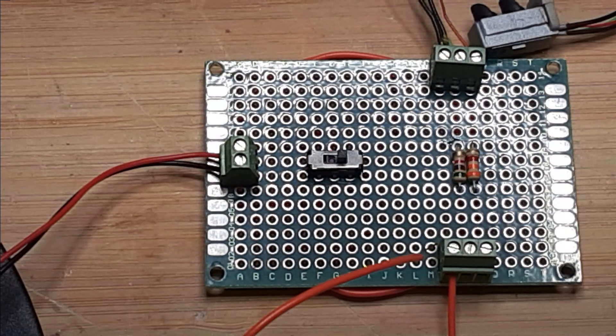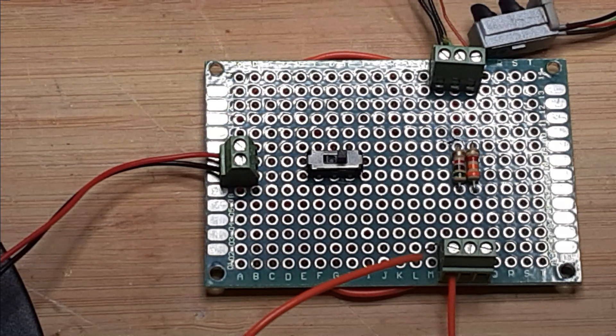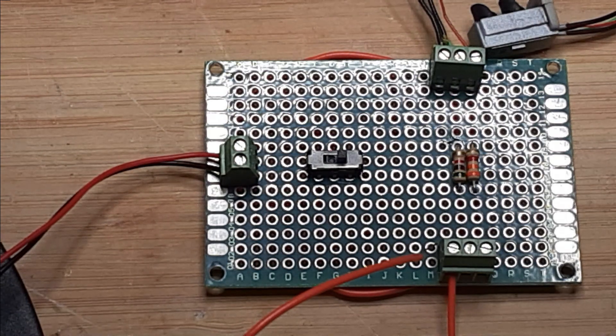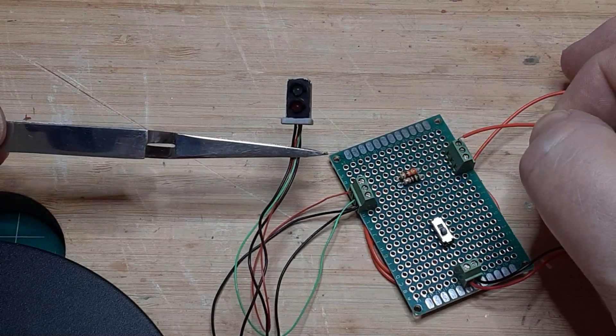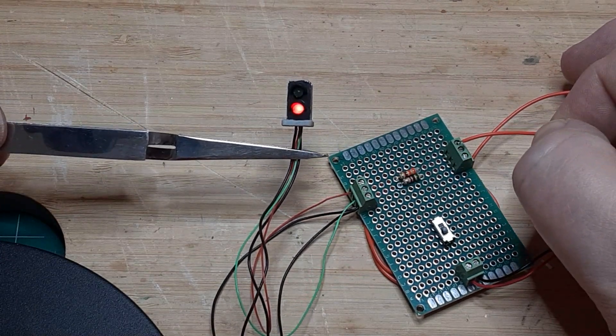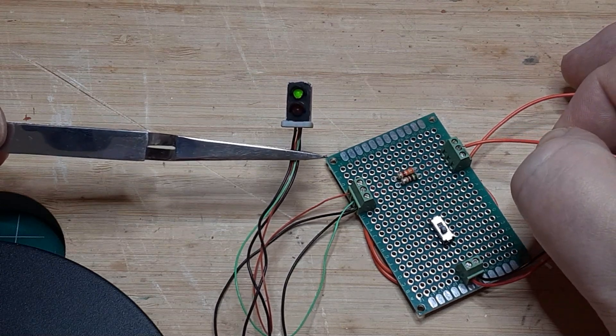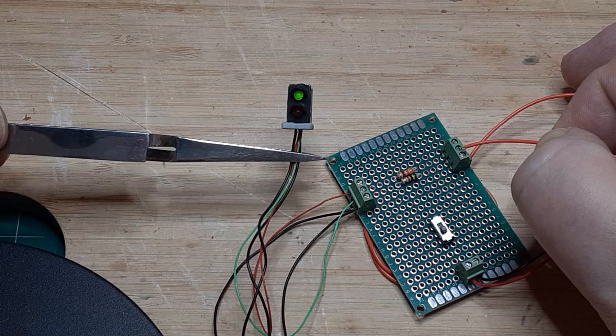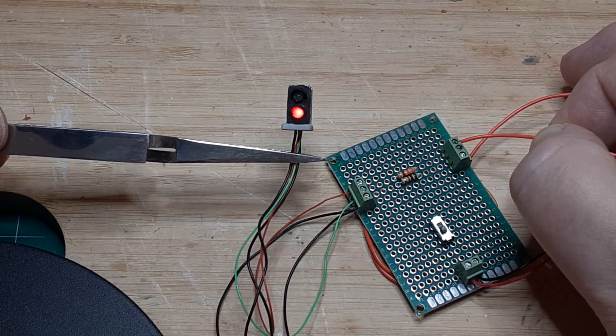Finally, insert a jumper wire into the common switch machine terminal. We'll use the other end of this wire to simulate the switch machine contacts. When we turn on the DC power, the signal will be dark. Touching the jumper wire to the center terminal of the switch machine will light the green LED. And touching the jumper wire to the end terminal will light the red LED.